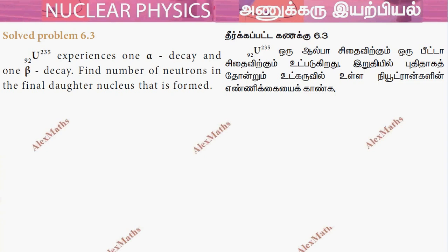Hi students, this is Alex here solving problem 6.3. Uranium-235 experiences one alpha decay and one beta decay. Find the number of neutrons in the final daughter nucleus that is formed. On my equation we have Uranium-92-235.